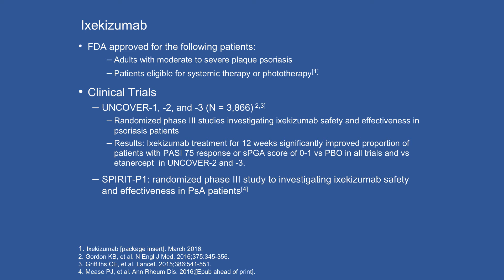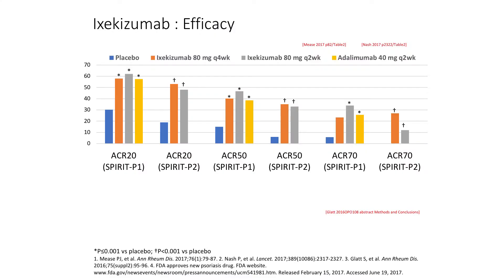Ixekizumab is newer to the market. It came to psoriasis first, so many of us have experience through dermatology, and now we can use it for psoriatic arthritis. In the SPIRIT trials you see ACR-20, 50, and 70 responses. What's notable now is these trials include head-to-head comparisons against adalimumab. The data suggest some benefits for both adalimumab and ixekizumab, but perhaps ixekizumab has a slight edge at higher doses.